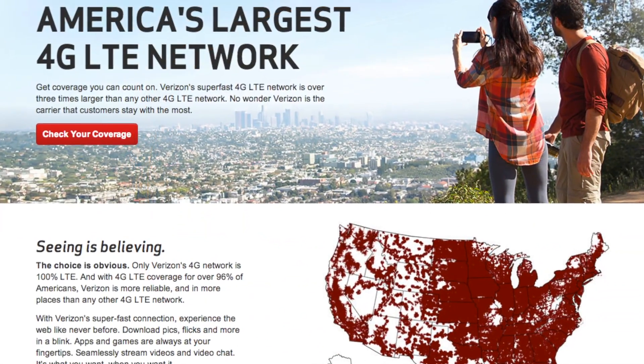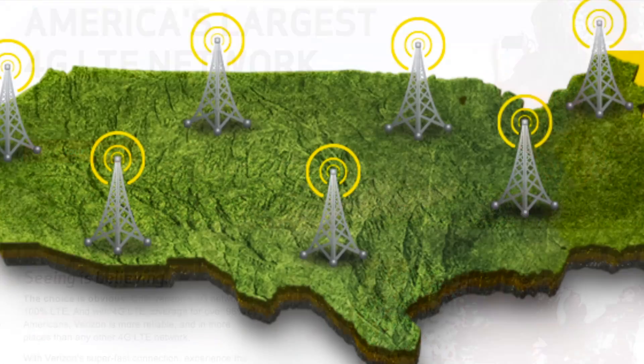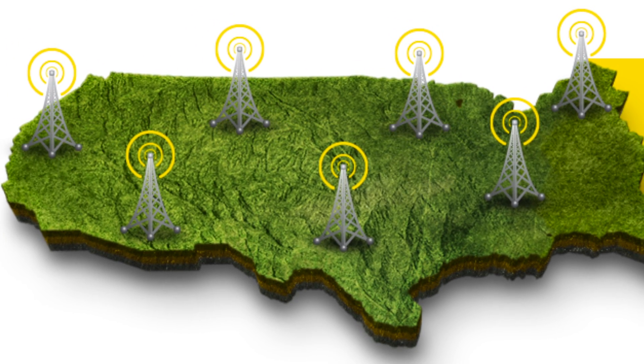But because Sprint is still a CDMA carrier, it's still authenticating every phone against its network list to make phone calls. So you still can't use a Verizon phone on Sprint or vice versa, even if they're LTE phones because of the CDMA part.